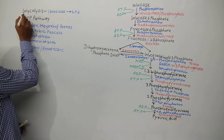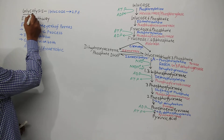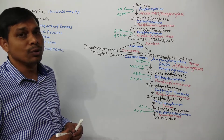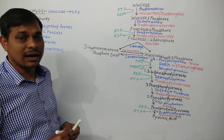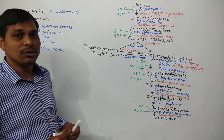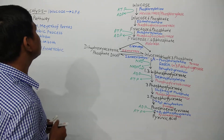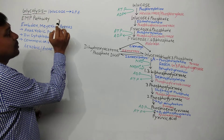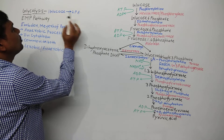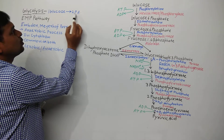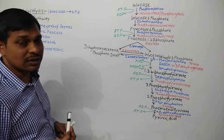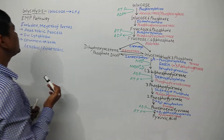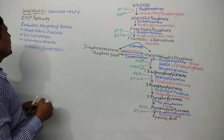Glyco means glucose and lysis means breakdown. So breakdown of glucose into pyruvate acid, or pyruvate, is the process of glycolysis. Glycolysis is a process that takes place in the cytoplasm of the cell.